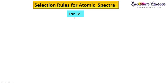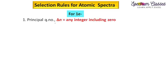We are going to discuss the first case for one electron system. As you know, for an atom we have four different quantum numbers. The first is the principal quantum number, and the selection rule applicable for this is delta n is equal to any integer including zero. For example, if we have a transition from 2s to 2p, then the change in the principal quantum number will be zero.